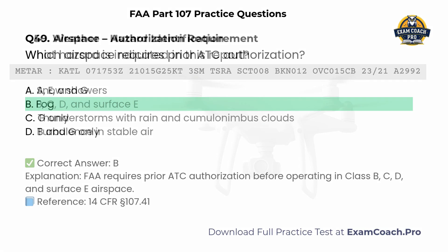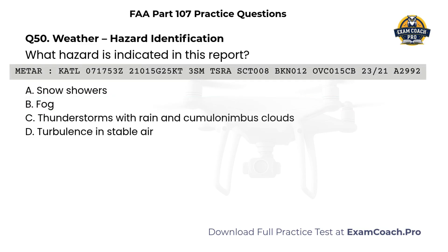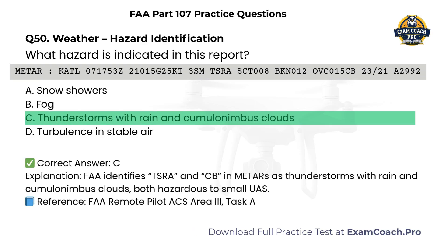Weather — Hazard Identification. Refer to METAR. What hazard is indicated in this report? A. Snow showers. B. Fog. C. Thunderstorms with rain and cumulonimbus clouds. D. Turbulence and stable air. Correct answer: C. Thunderstorms with rain and cumulonimbus clouds. The FAA identifies TSRA and CB in METARs as thunderstorms with rain and cumulonimbus clouds, both hazardous to small UAS.